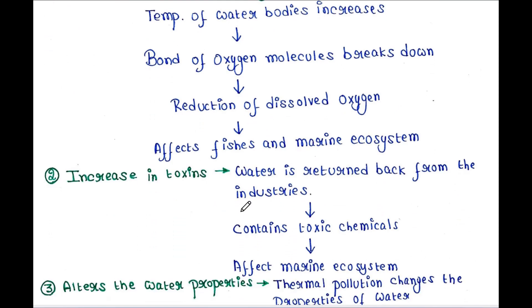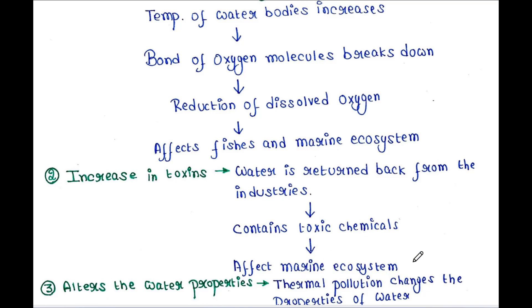Next is an increase in toxins. Water returned from industries contains toxic chemicals that affect the marine ecosystem. Thermal pollution also alters the properties of water, and the food supply of water creatures gets disrupted.